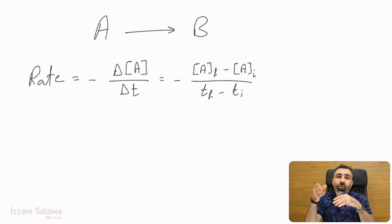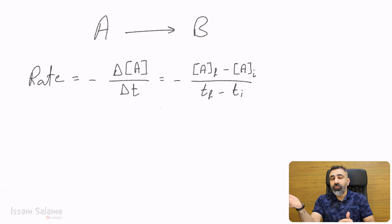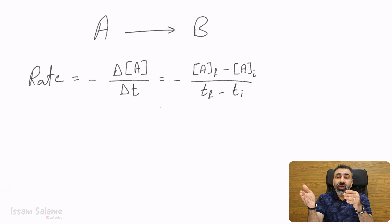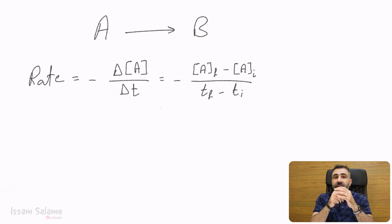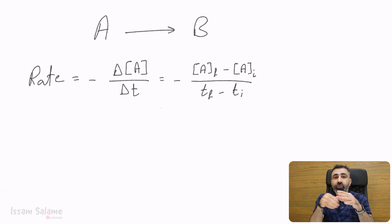Let me explain why we multiply it by a negative value. As you know, A is a reactant, which means that its concentration is going to decrease with time, which means that concentration final minus concentration initial is going to be negative. For us to get a positive value for the rate, we multiply it by a negative sign. That's why if you want to calculate the rate from the reactants, you have to multiply the fraction by a negative sign — it's going to be negative delta concentration of a reactant over delta T.